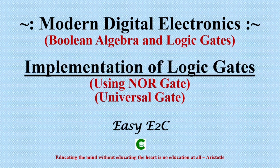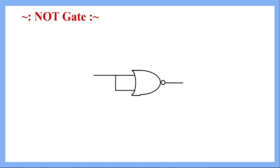Welcome back. In our last class we implemented logic gates using one of the universal gates, which is the NAND gate. In today's class we will implement all the basic gates again by using the NOR gate, which is another universal gate. Let's get started. We will begin with the NOT gate, followed by all other gates.